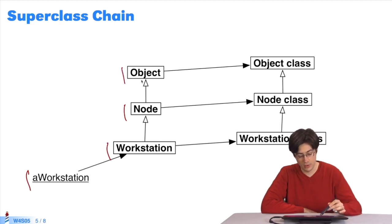Here, you must pay attention to the arrows. The arrow with a blank tip indicates a subclass relationship. Node is a subclass of object. Workstation is a subclass of node. The arrow with a black point, sometimes represented as a simple two-line arrow, indicates instantiation.